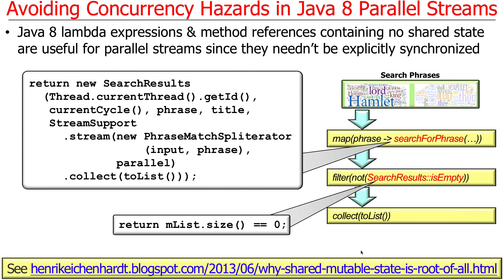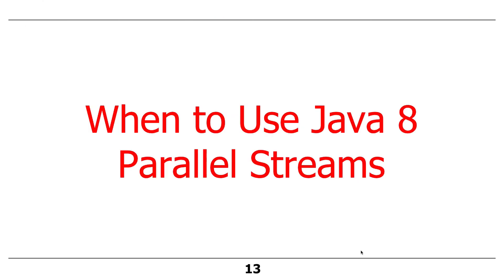The right thing to do is to use method references or lambdas whose implementations don't modify mutable state — no shared mutable state — and then you don't have to synchronize anything. Here are some examples from our search stream gang: we return a value or compute something, and this does not have any side effects other than to take its input, do some work, and return a result. If you want to learn more about the problem that underlies all this, there's a great blog posting called 'Why Shared Mutable State is the Root of All Evil,' which explains why this is a big problem.